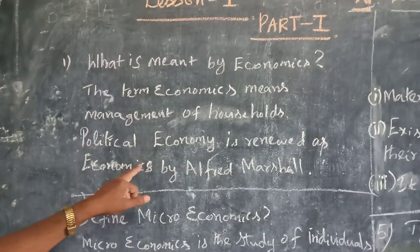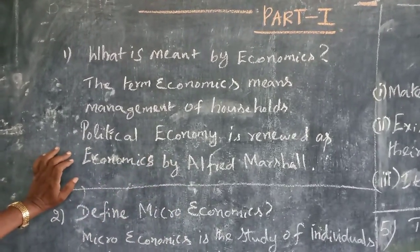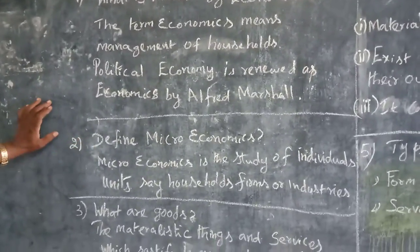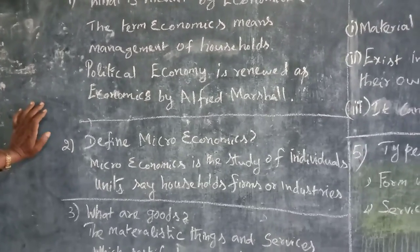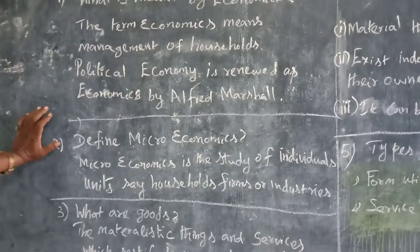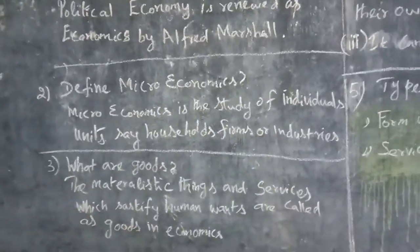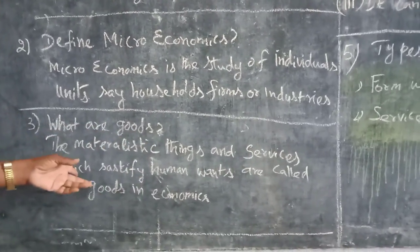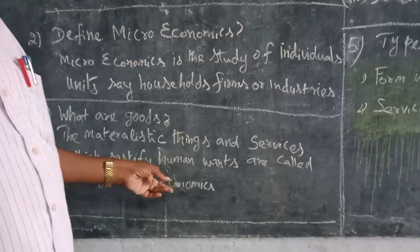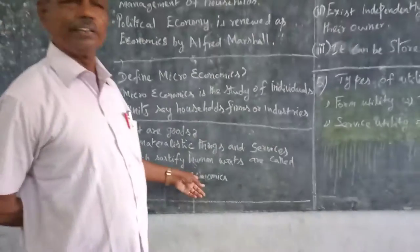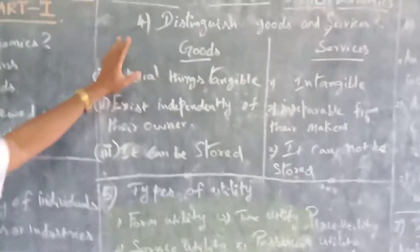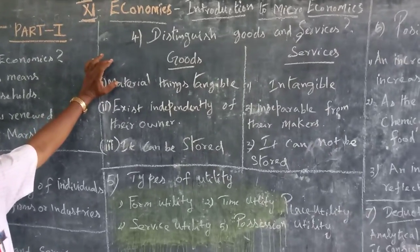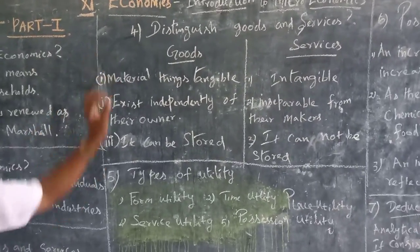Political economy was renamed as economics by Alfred Marshall. Microeconomics is the study of individual units such as households, farms, or industries. Goods are material things and services which satisfy human wants; things that satisfy human wants are called goods in economics. Goods are tangible material things, as distinguished from services.